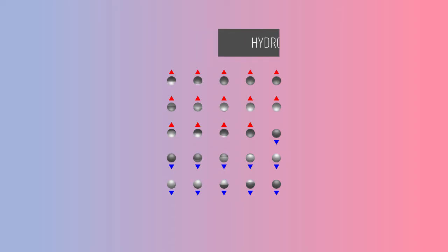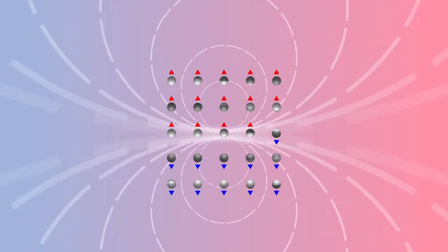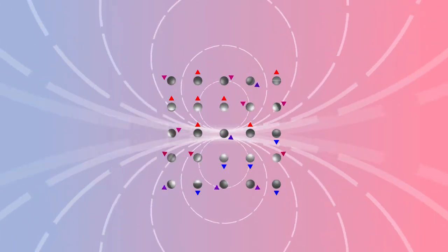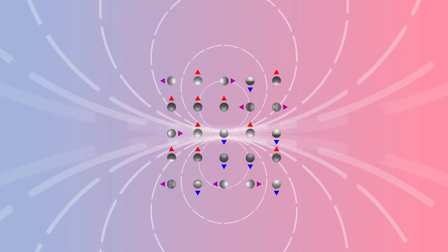Then repeated radio frequency current pulses at just the right frequency are introduced. When a pulse is turned on, it knocks the protons out of their alignment, changing the direction of their tiny magnetic fields.